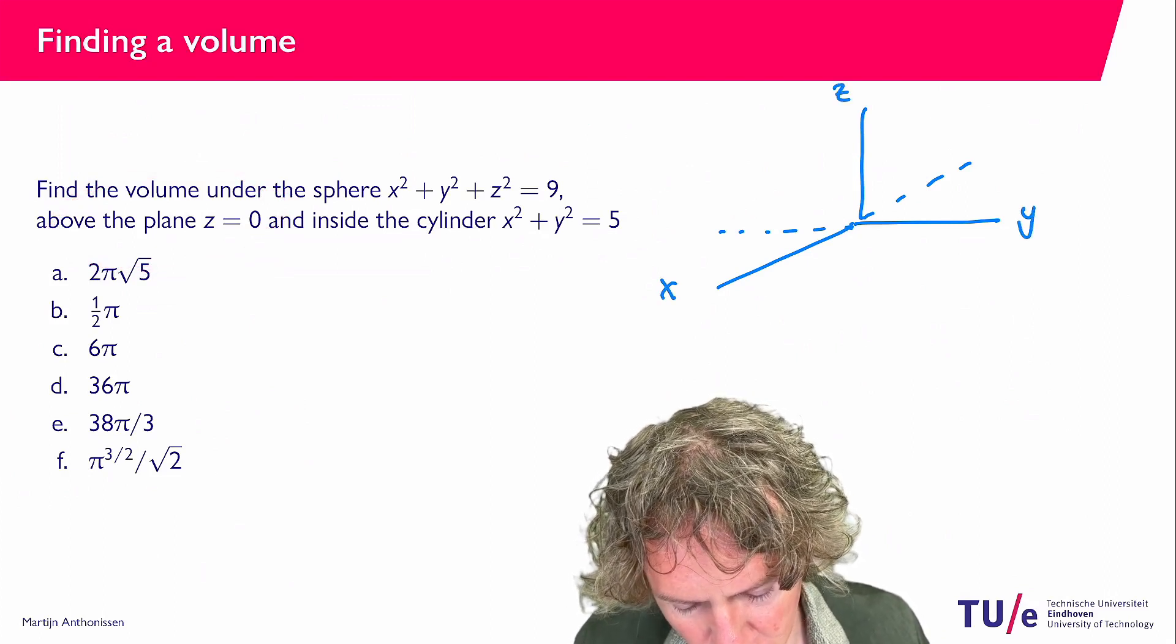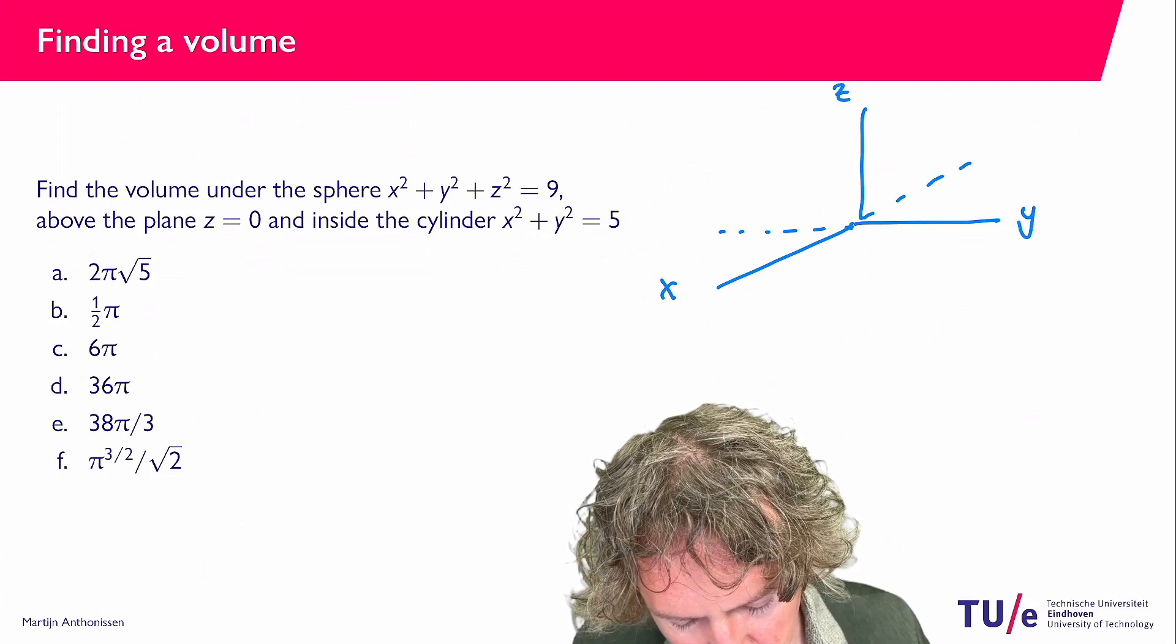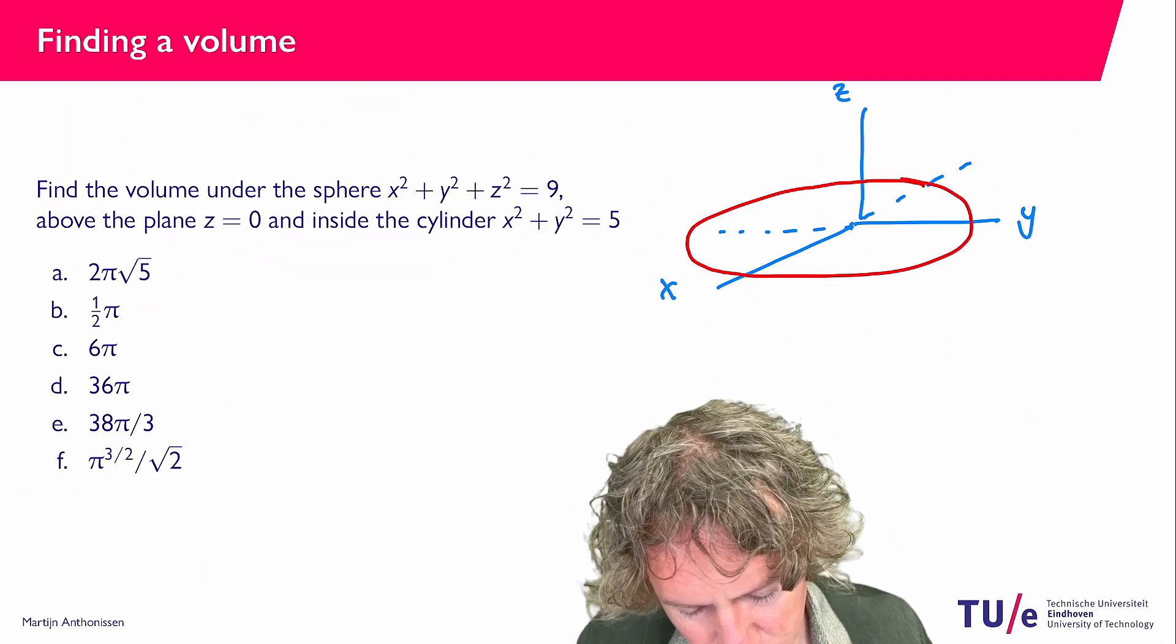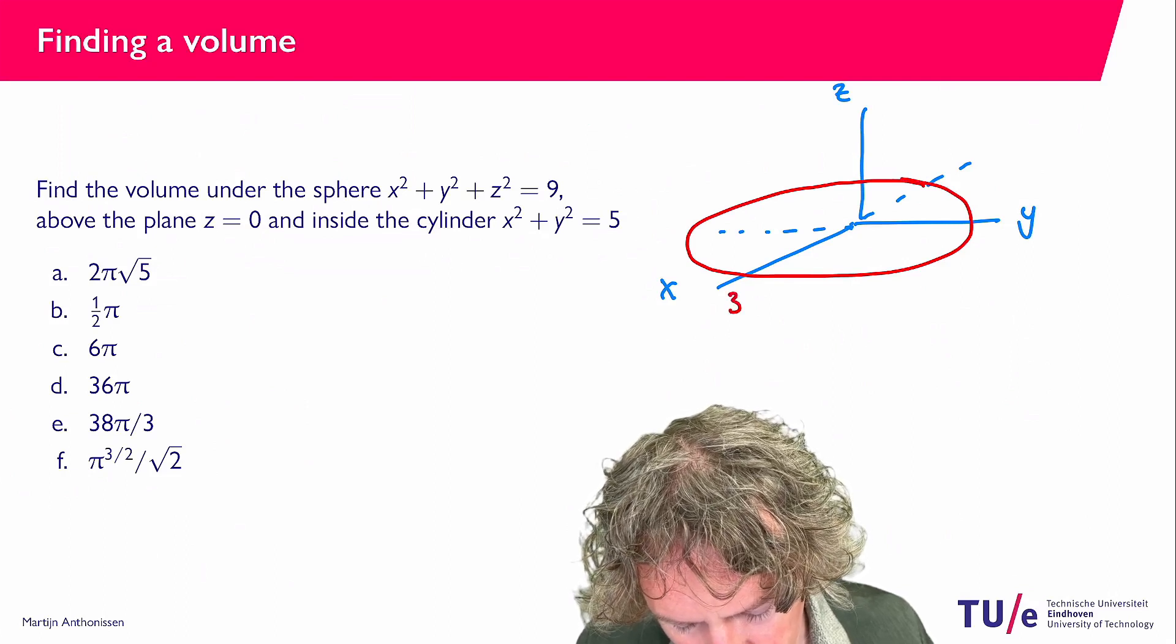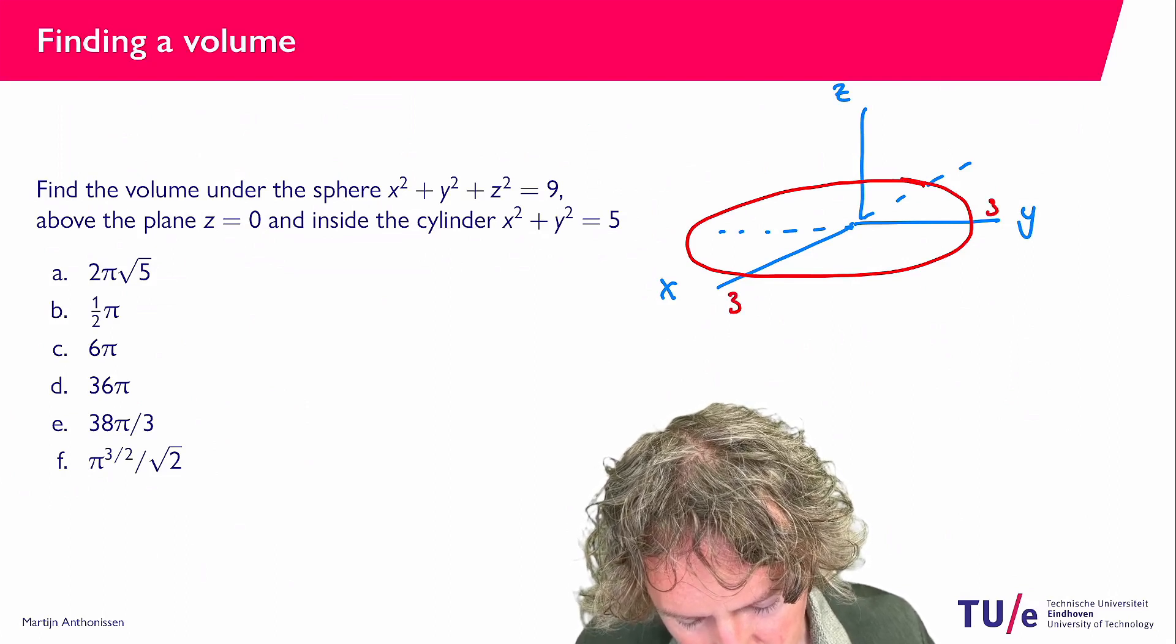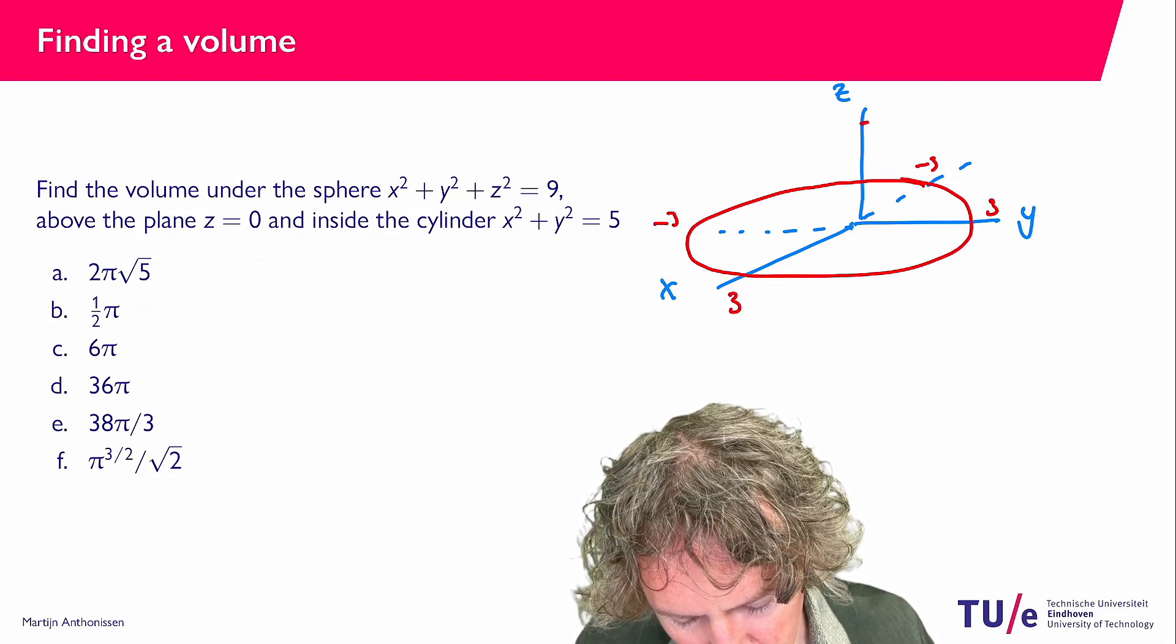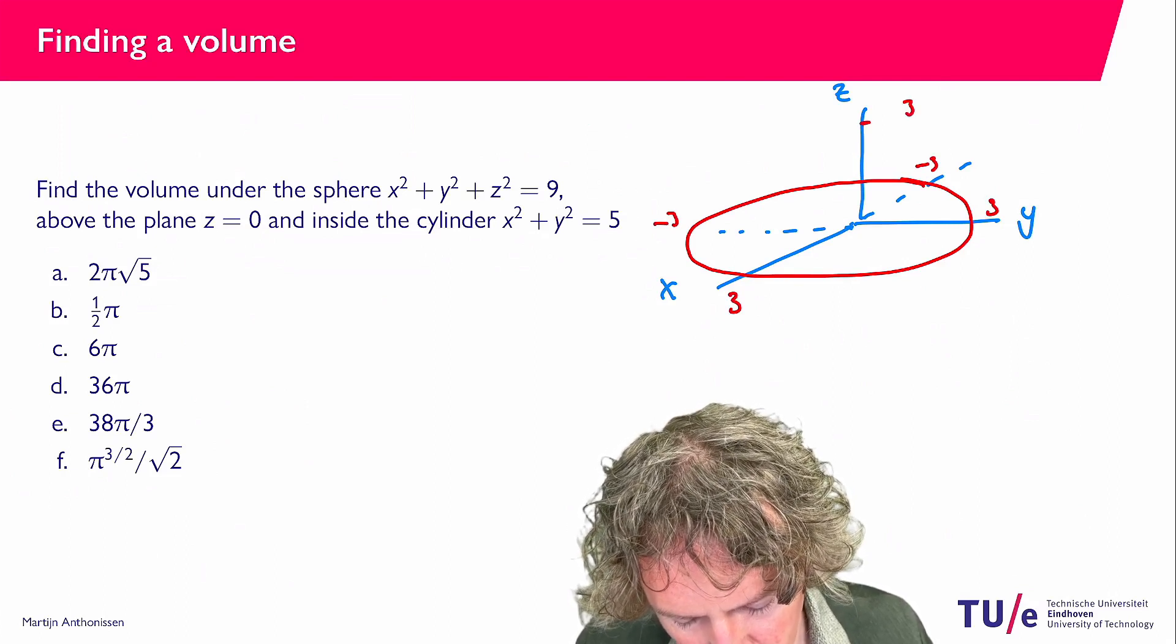So let's plot that thing or try to plot it so it's like a big circle in the ground plane. Radius equals 3 and then the top here on the z-axis is also at 3